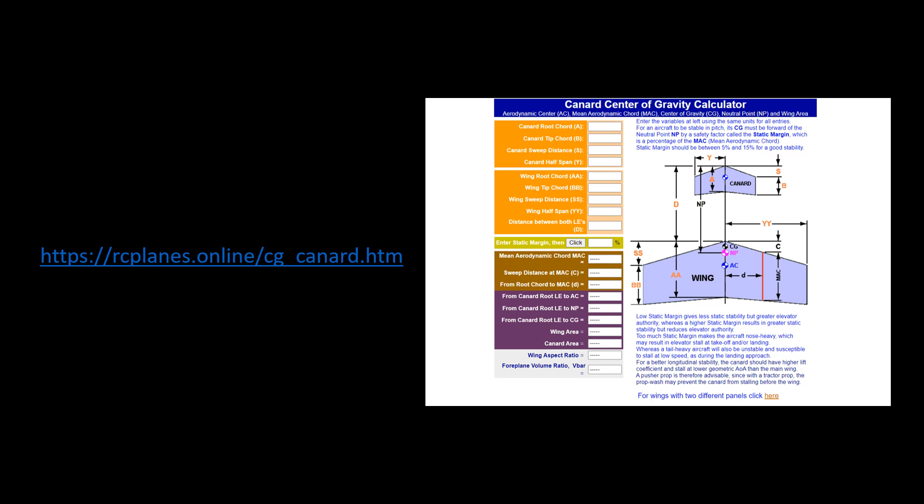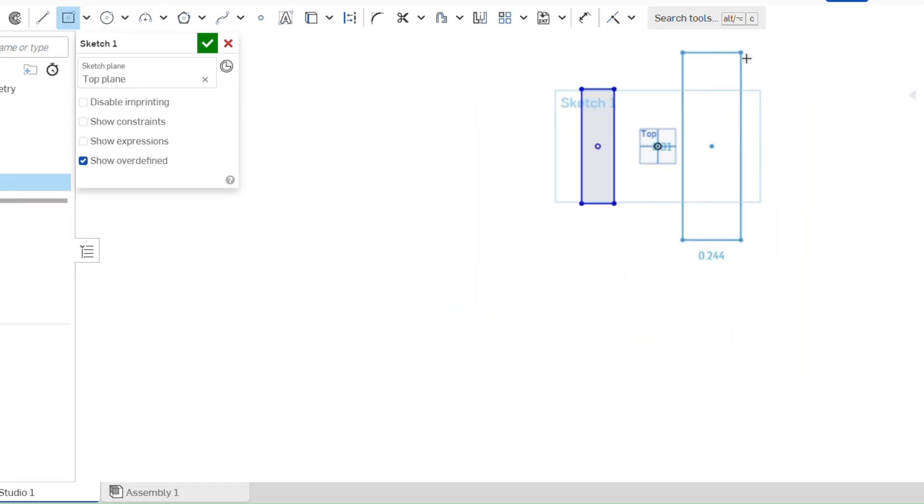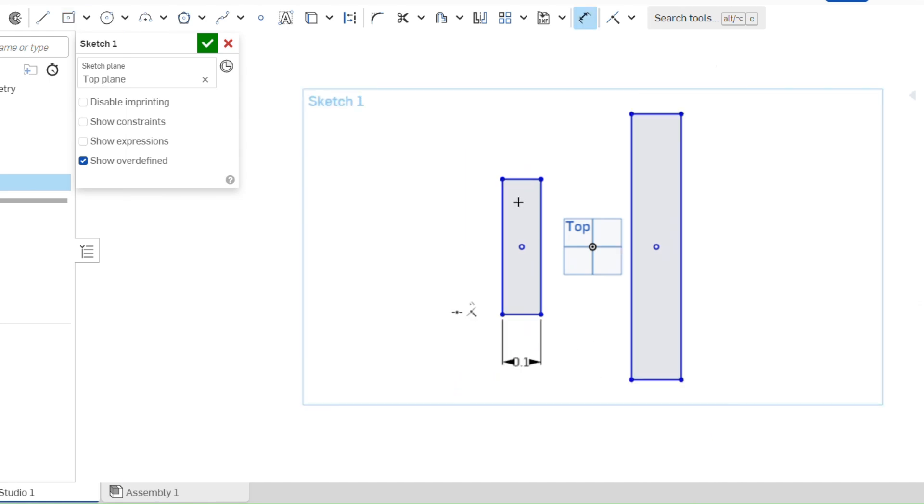Go to this website and simply input your design parameters using the same units. An easy way to do this is to open a CAD software such as Onshape to sketch the design and measure the parameters. You would need the values for the canard and wing root chord,